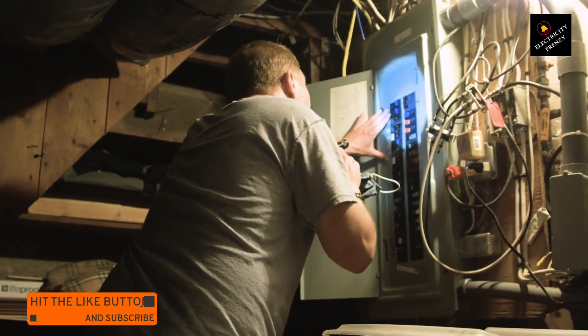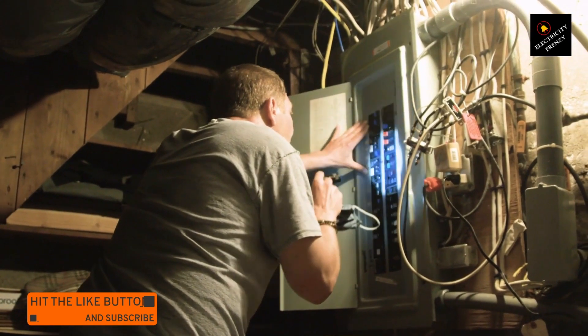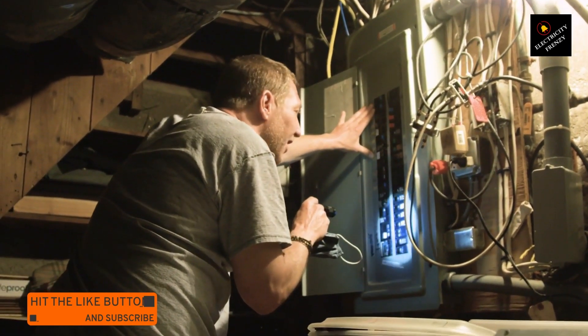Examine the power cord and internal wiring of the dryer for any signs of wear, fraying, or exposed wires. If you notice any issues, discontinue use and have a professional technician repair or replace the damaged parts.